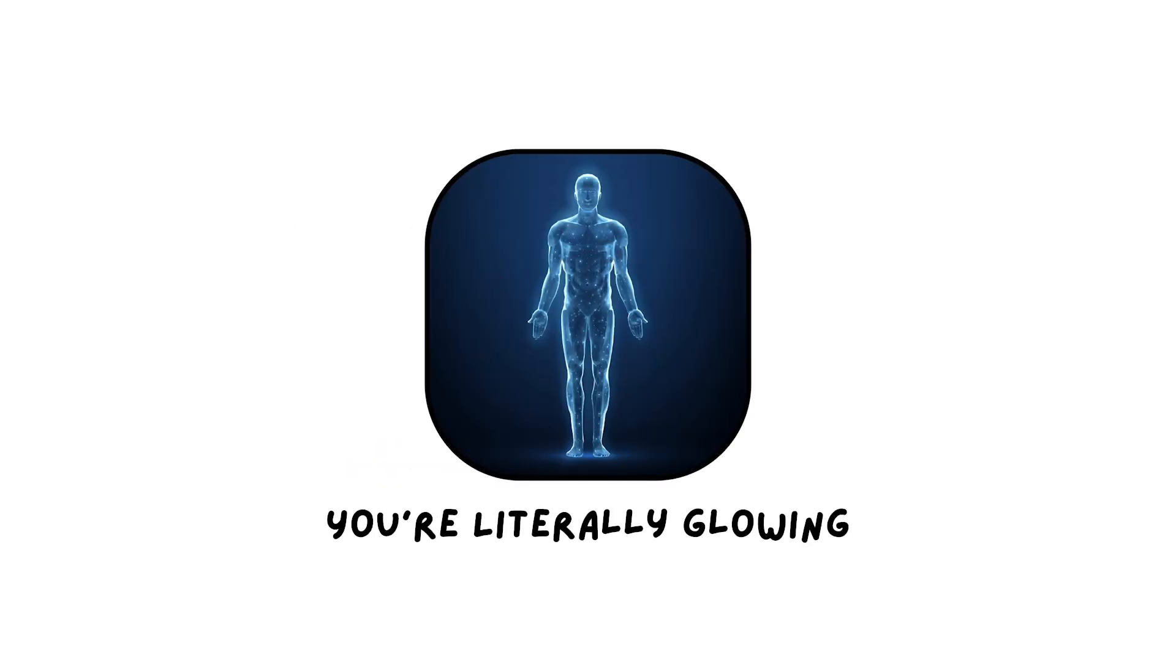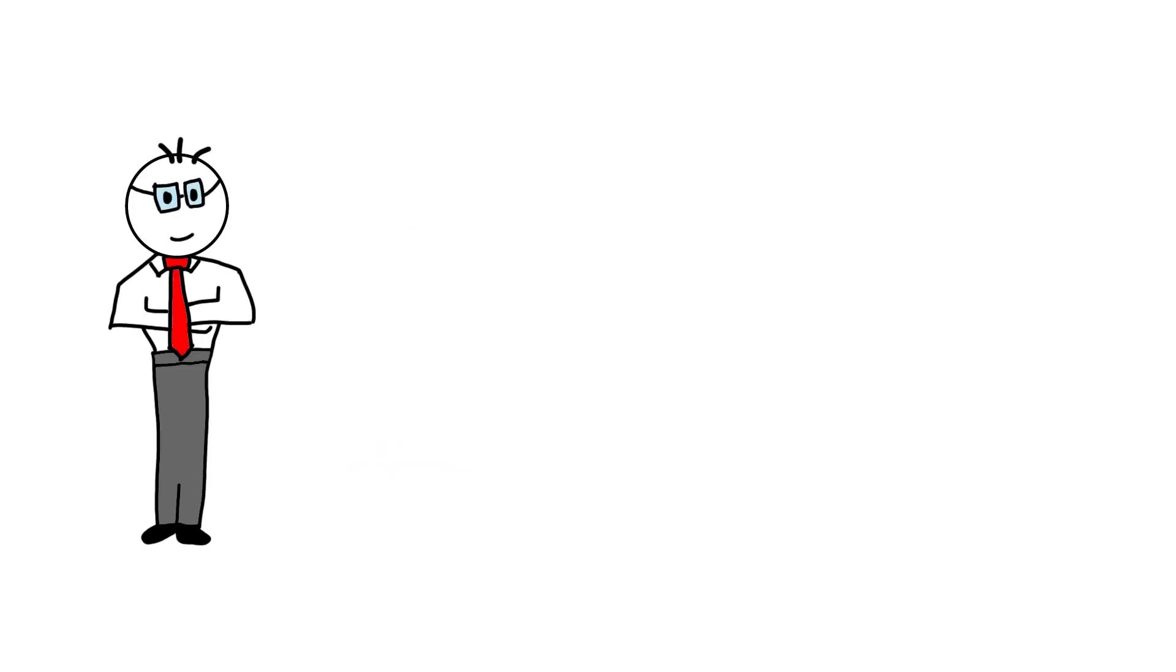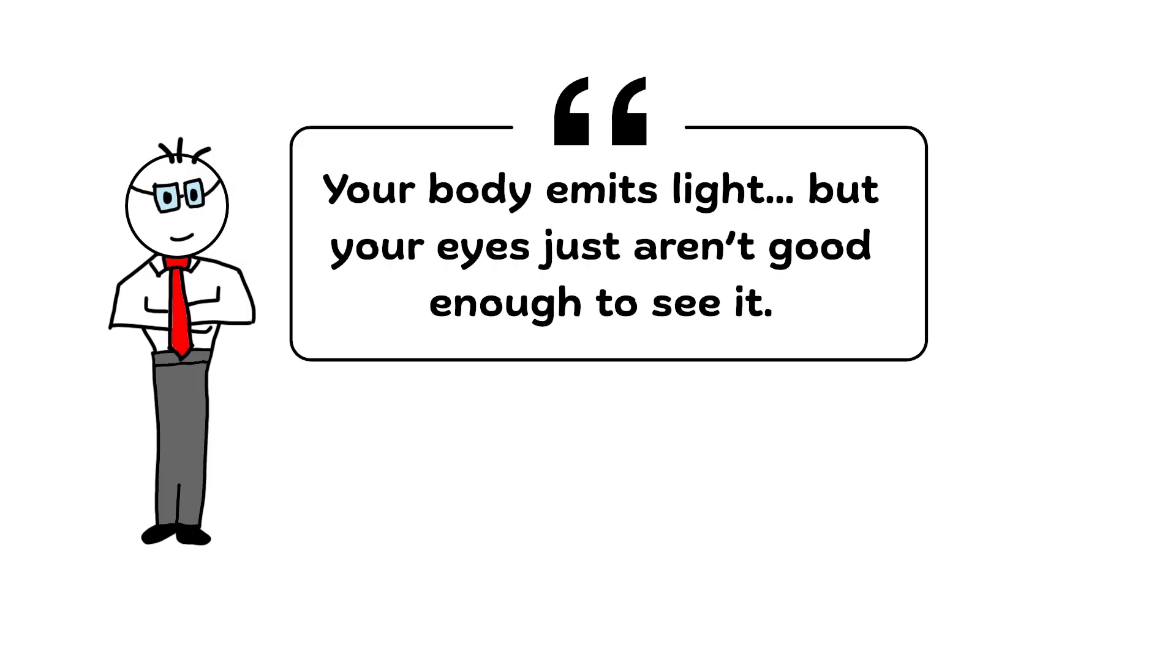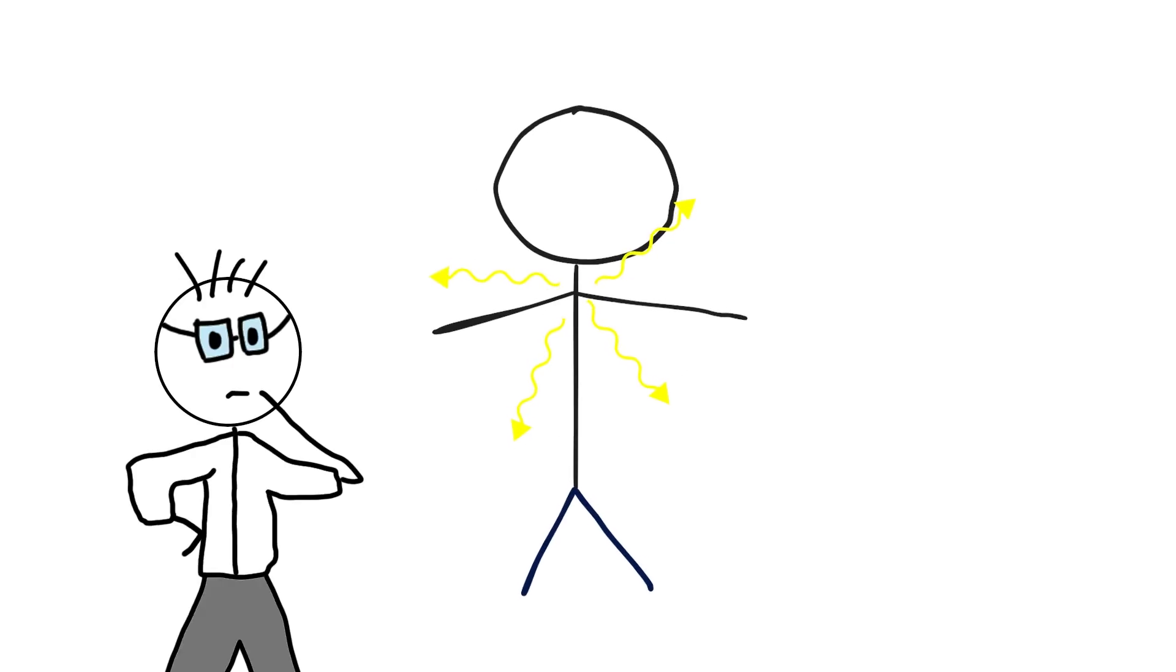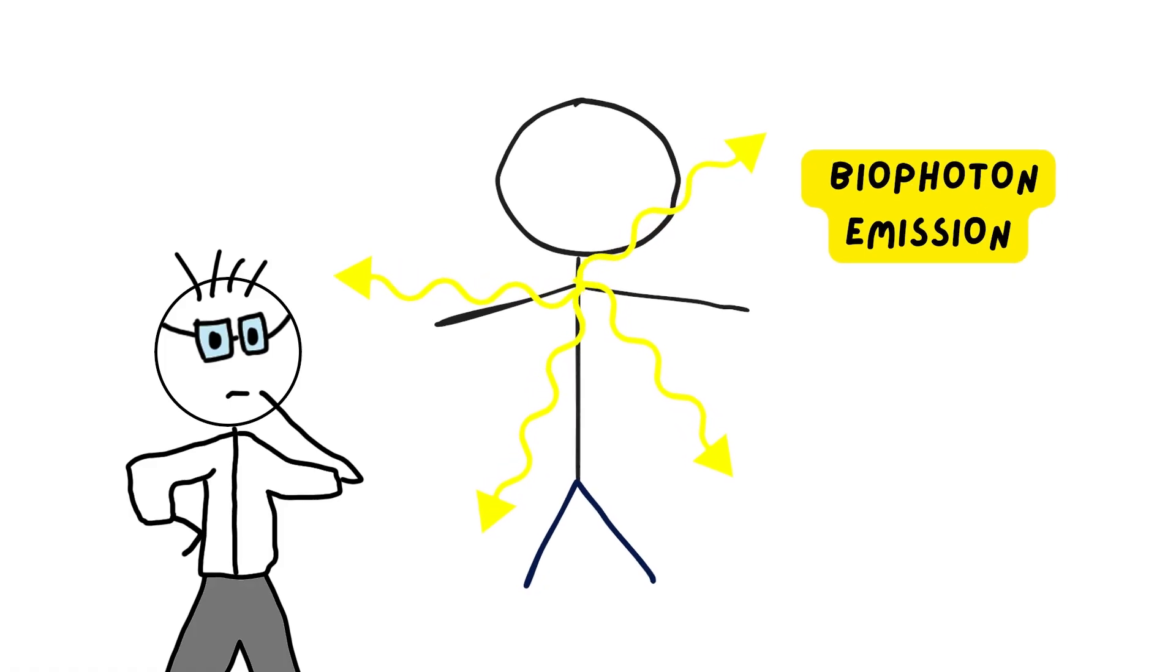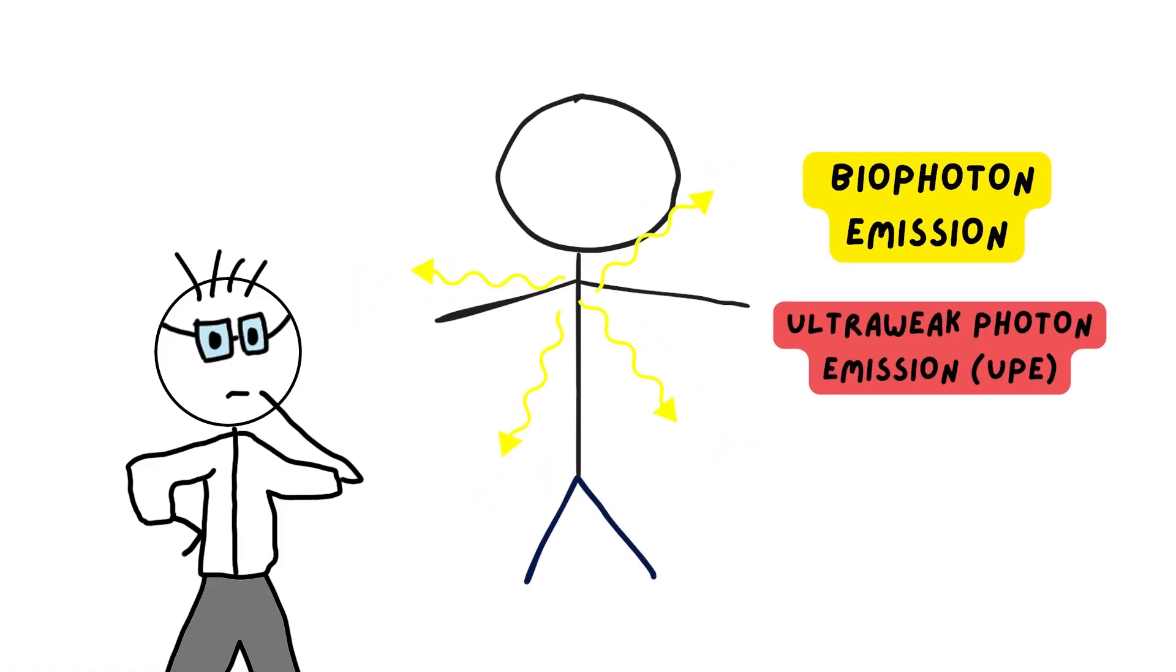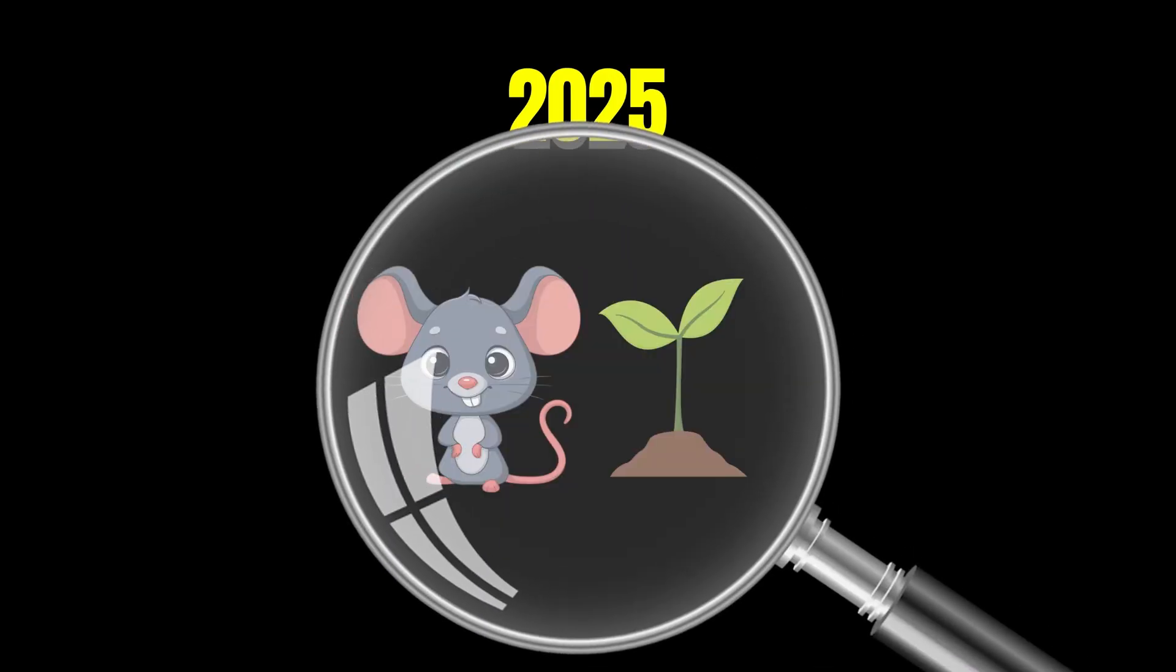You're literally glowing, just too dim to see. Here's where the tone goes sci-fi. Your body emits light, but your eyes just aren't good enough to see it. Yes, really. Scientists have shown that living organisms emit ultra-weak photons, a phenomenon called biophoton emission or ultra-weak photon emission. A 2025 study even measured live mice and plants in ultra-dark boxes, detecting faint visible light that ceased after death.